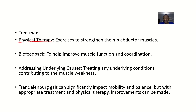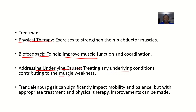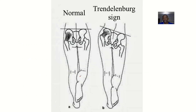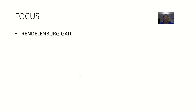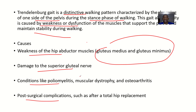For treatment, physical therapy and exercises can help strengthen the hip abductor muscles. Biofeedback can help improve muscle function and coordination. Addressing the underlying condition — treating any condition that is contributing to muscle weakness — can also help with this type of gait.